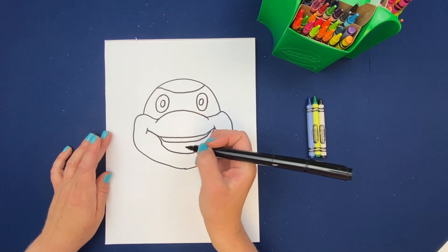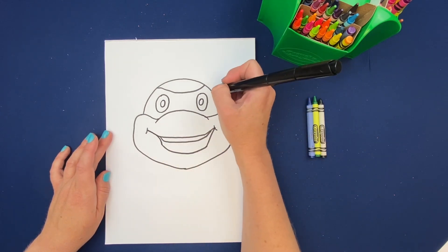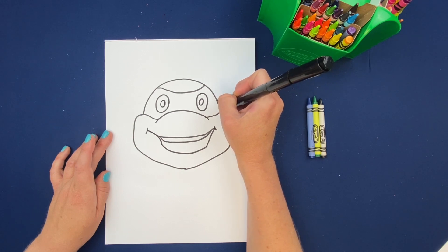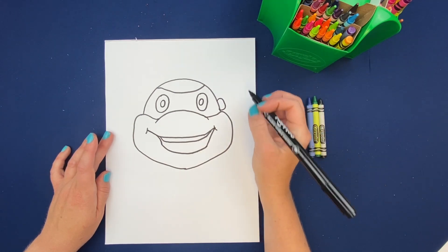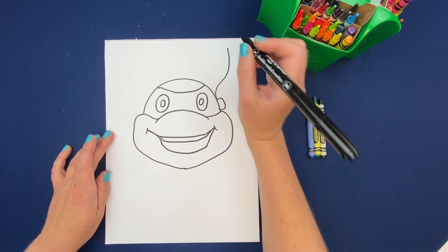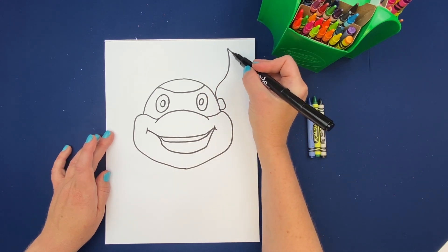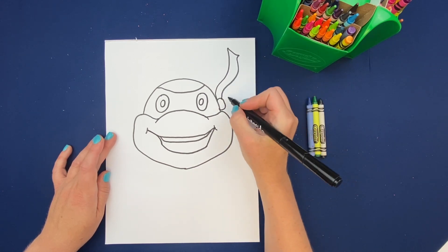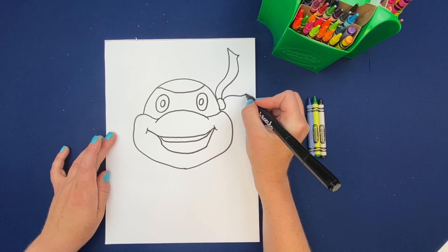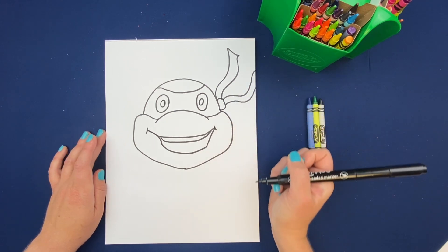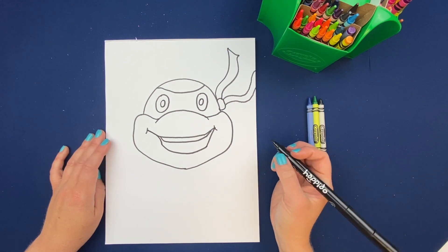Okay, now we want to do the back of his face mask. So we're just gonna do a little round knot. And we're gonna put one little end of the mask flying through the air. And then the other one, same thing, kind of flying back there. It can go off the page. And that's gonna be his blue mask.